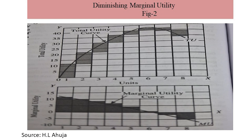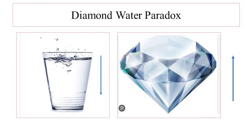It is worth mentioning that the marginal utility of money is generally never zero or negative, because money represents purchasing power over all other goods. Since a person can satisfy all his material wants with enough money, and since total wants are practically unlimited, the marginal utility of money never falls to zero. Next, we will study the concept of diamond-water paradox, which is of crucial significance in explaining the determination of prices of commodities.